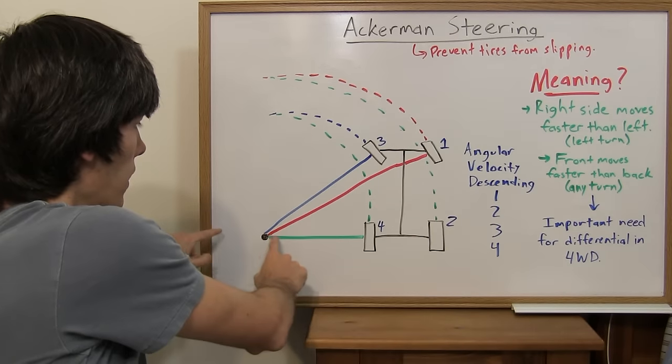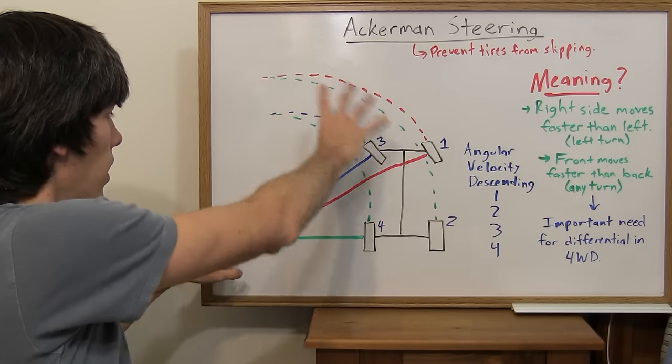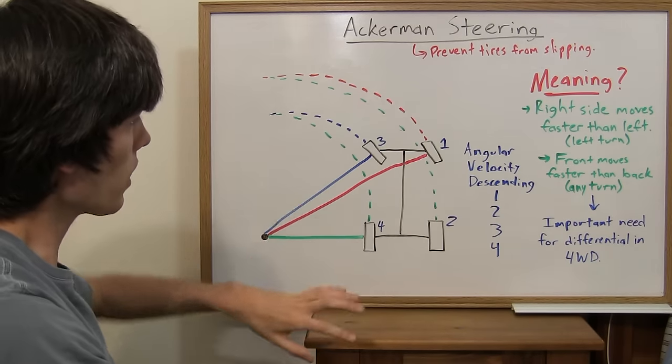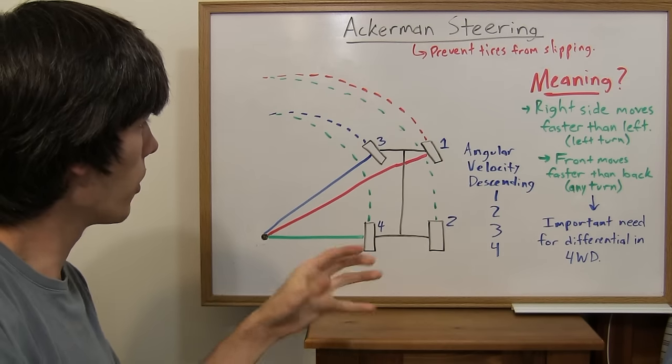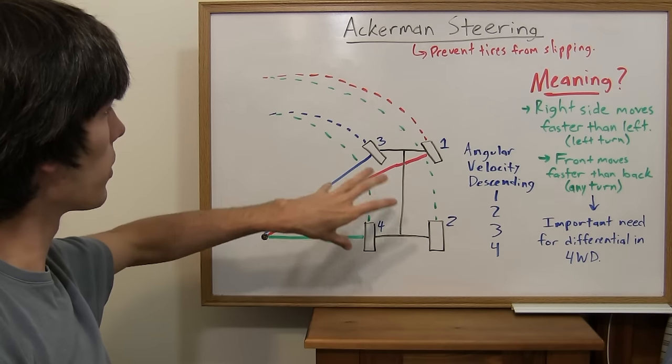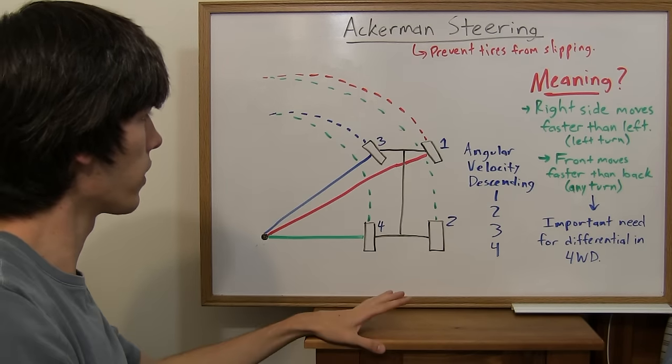If these two had the same angle, then they'd have to slip around some uncommon point, and it wouldn't work as well, especially at high speeds. The Ackermann principle is great for solving this problem.